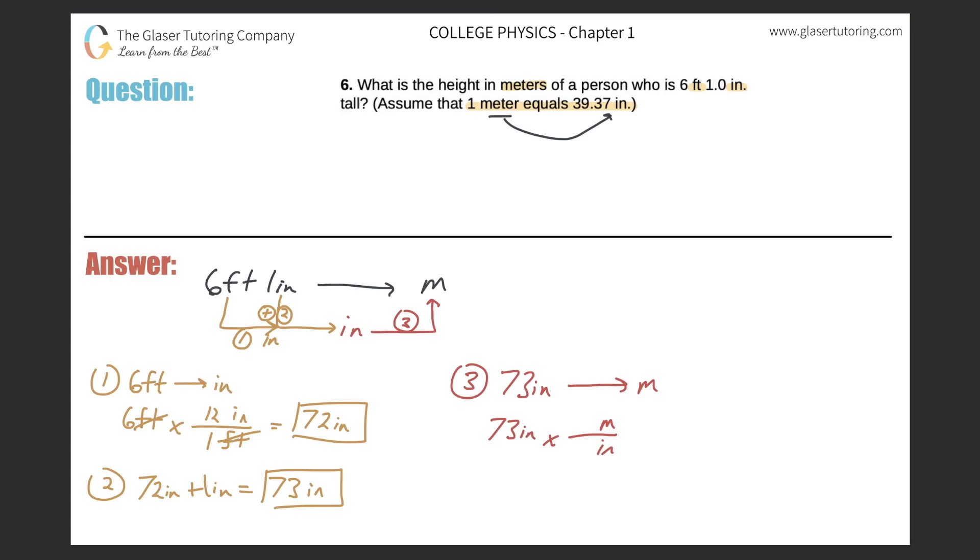We know that one meter is equal to 39.37 inches. The inches cancel, so this basically works out to be a division. Let's plug that into the calculator: 73 divided by 39.37, and that works out to be approximately—I'm going to round slightly—1.85 meters.